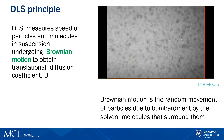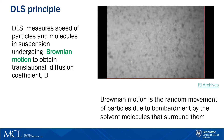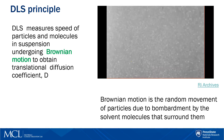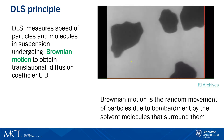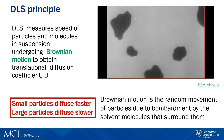DLS determines the size of particles in suspension where particles randomly move as a result of Brownian motion. DLS measures the speed of the particle to obtain the diffusion coefficient. There is a dependence between particle size and particle speed: small particles diffuse faster, large particles diffuse slower.